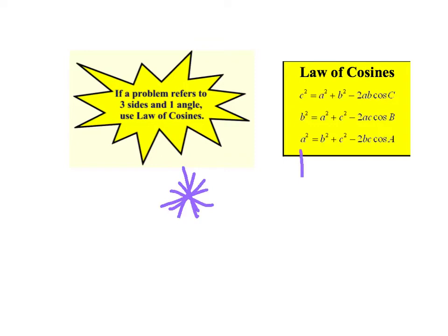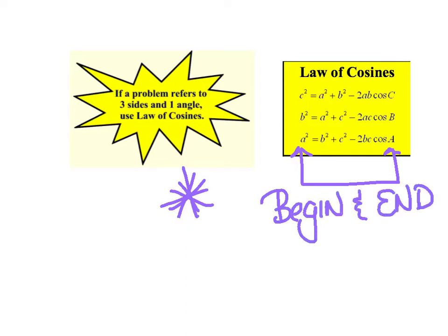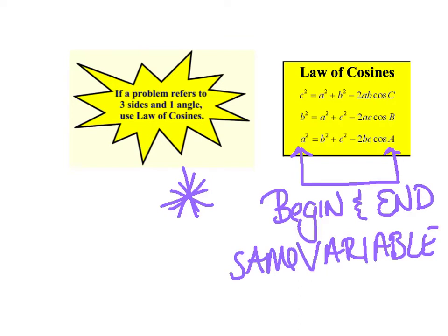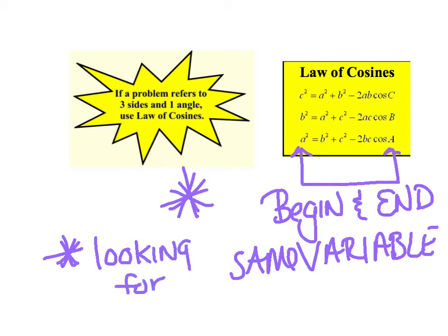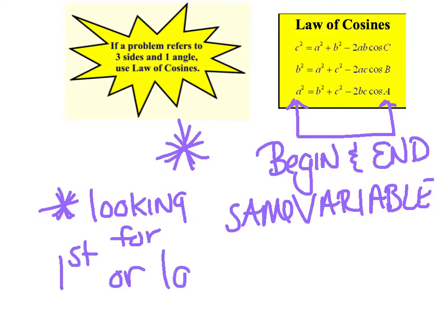What we want you to put in your book is: they have to begin and end with the same variable. That's a key to this. The other piece is that what you're looking for is either going to be first or last. That's the key to using the law of cosines — memorizing that the beginning and end start with the same. So if I start with a, I end with a, and that means I'm using b and c in the middle and b and c again. If I start with b, I end with b, using a and c in the middle. Same with c — start and end with c, use a and b in the middle.